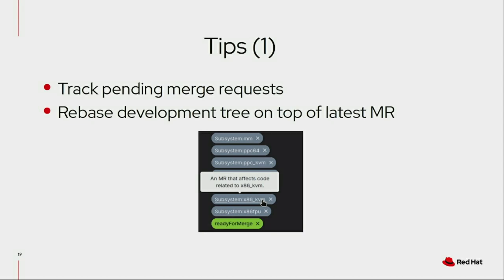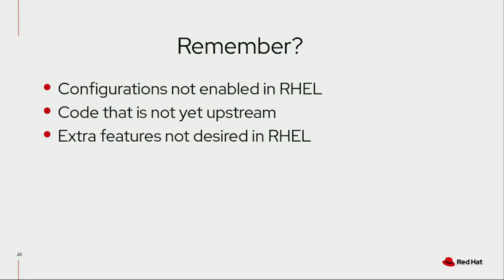My first tip is to track what is going on in GitLab — track if there are any pending merge requests for the subsystem you care about. The bots add labels for all the subsystems that are affected. So if you're interested in file systems, you do a search for subsystem FS. There's no watch functionality in GitLab, but you can look at all merge requests affecting a given subsystem. My suggestion is that you rebase your development tree on top of all the pending merge requests.